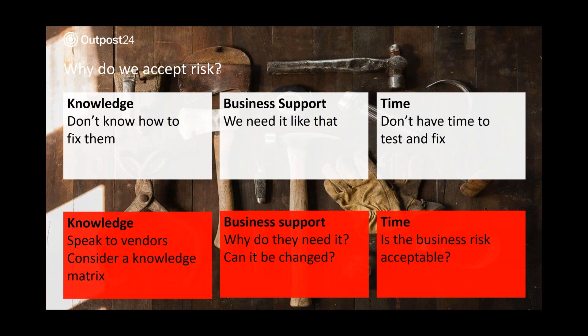The last one is time — there is no fix for time. But what we can do is try to understand the business risk of not having those vulnerabilities fixed. Does the business find that risk acceptable? 'We can't patch the PCI environment because we don't have the time or resources to do this out of hours' — is that acceptable to the business? If not, then they have to make a decision about what doesn't go on the list of things to do. It's all about getting the business to understand the risk of these things and forcing them to give you time to actually do them.